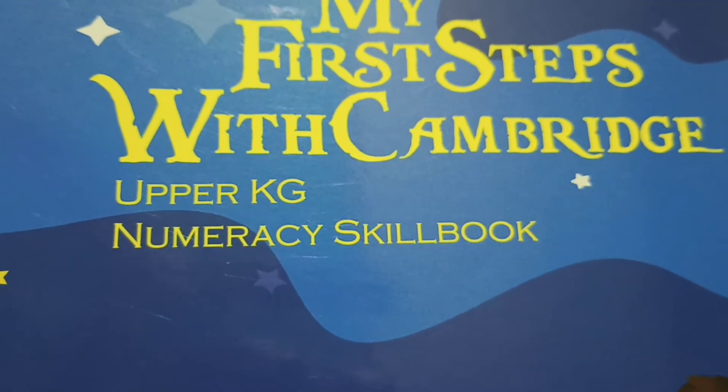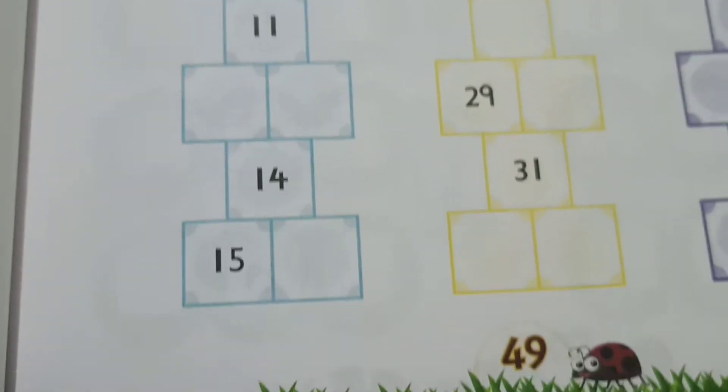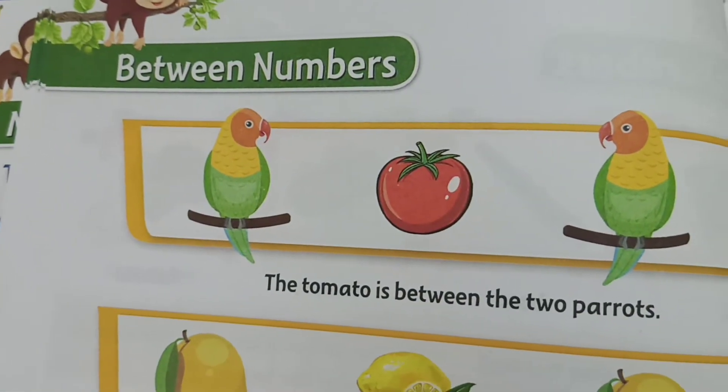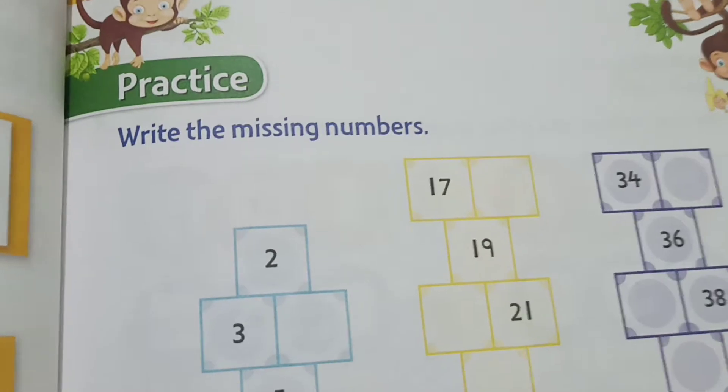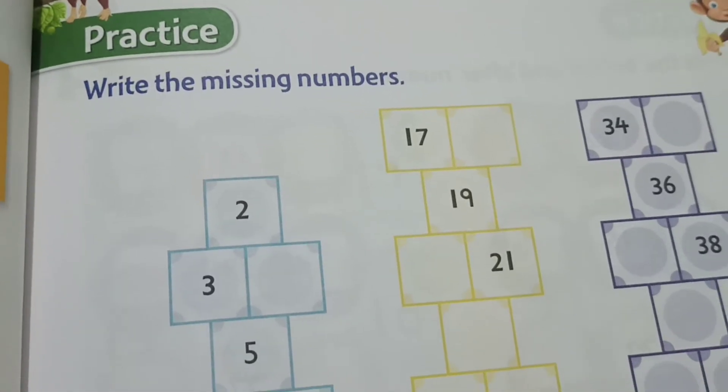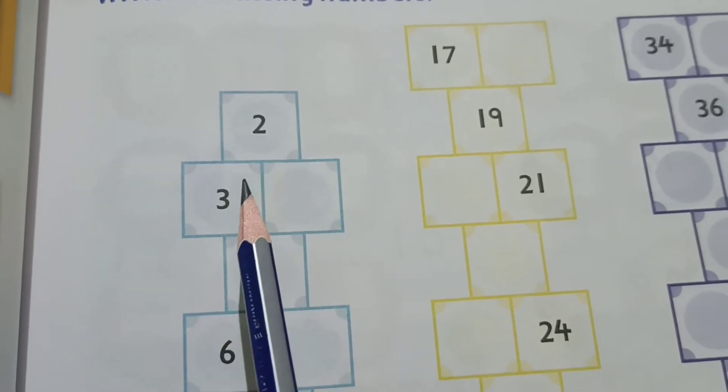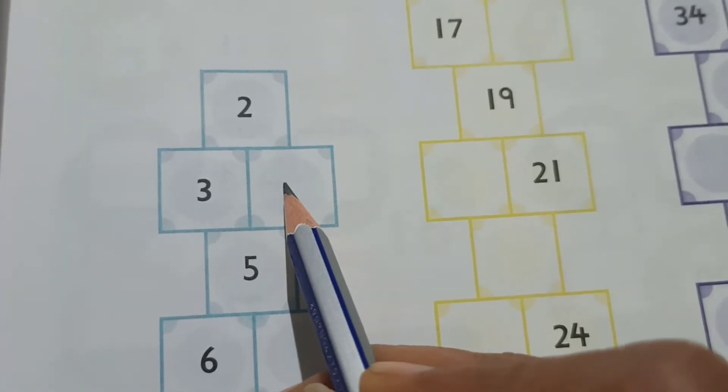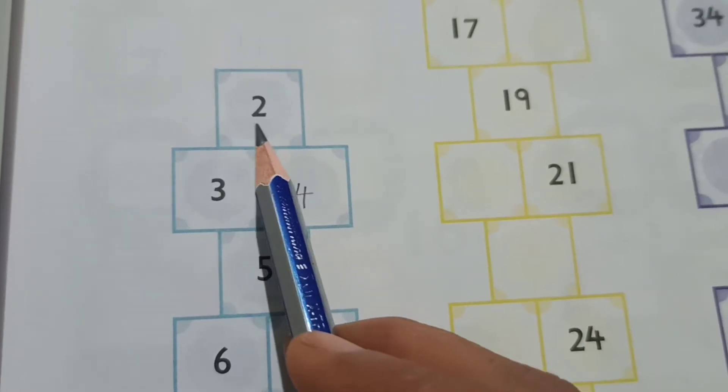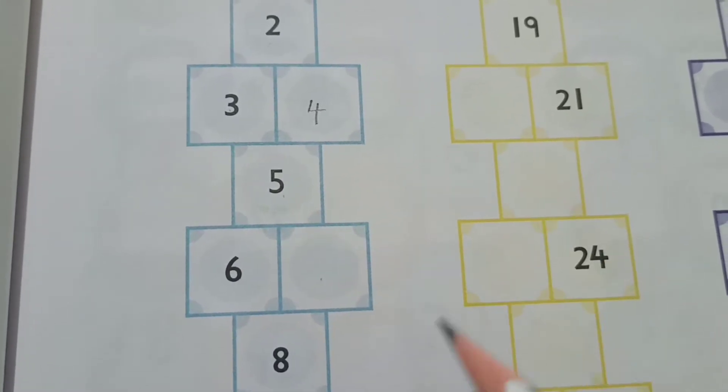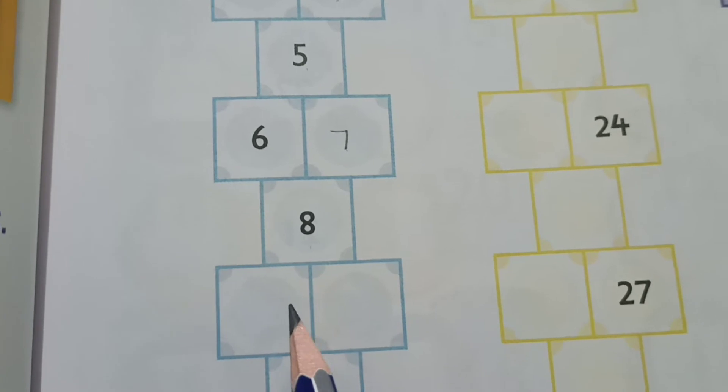Welcome back to the numeracy skill book. This is page number 49. We have finished between numbers. Today we are going to write the missing numbers. So now here you can see the steps. Here two, three, so here we'll write four.